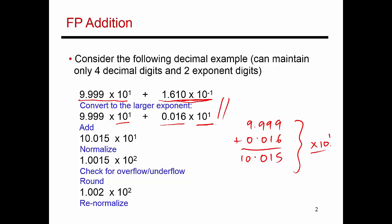Once I've done this math, I get the result 10.015 times 10 to the power 1. Now this result is not in normalized form, meaning it has more than one digit to the left of the decimal point. So it has to be renormalized. I shift it one place to the right, it becomes 1.0015, and the exponent becomes 2.